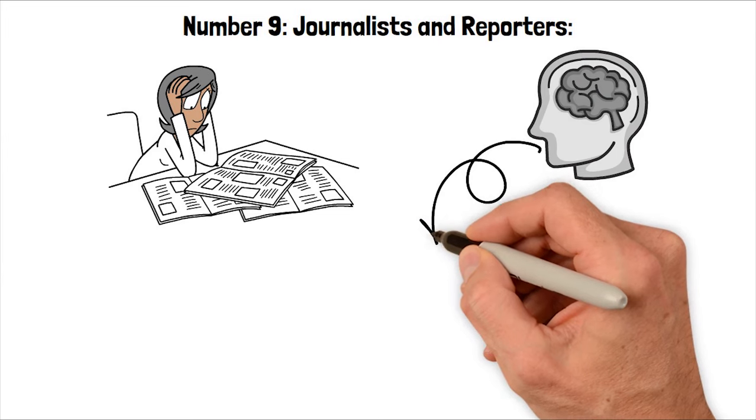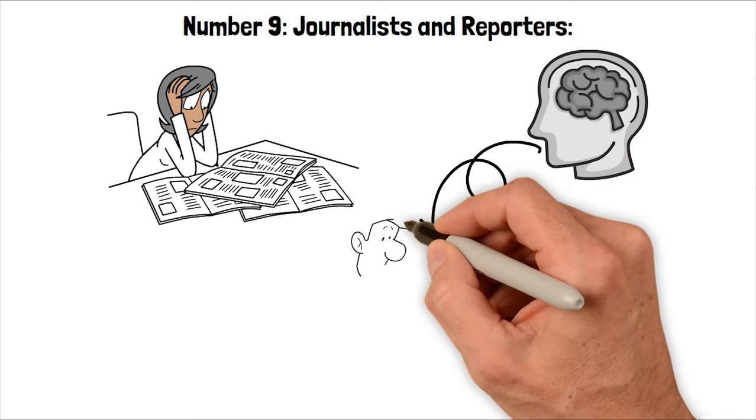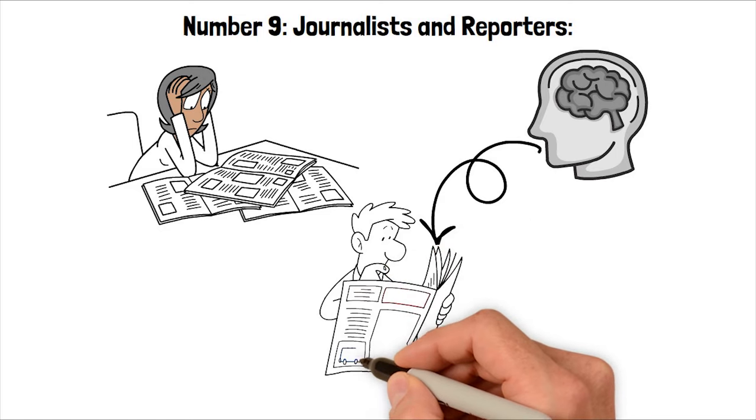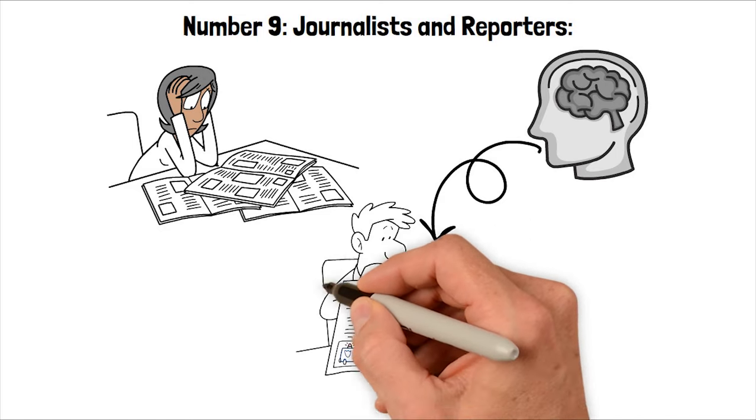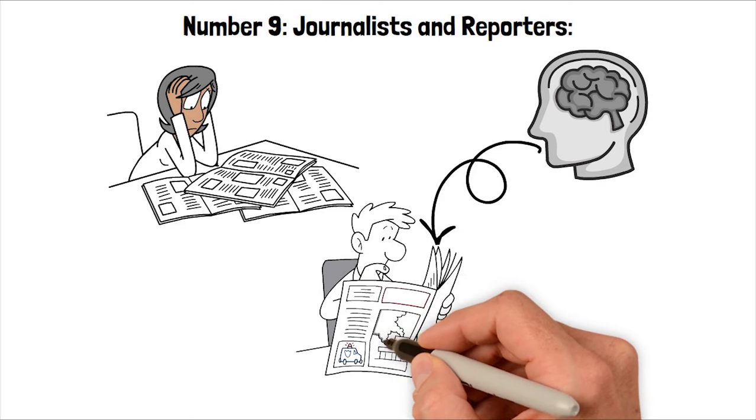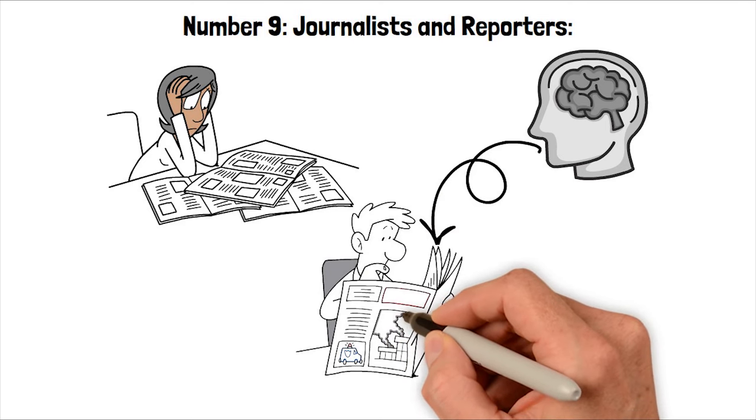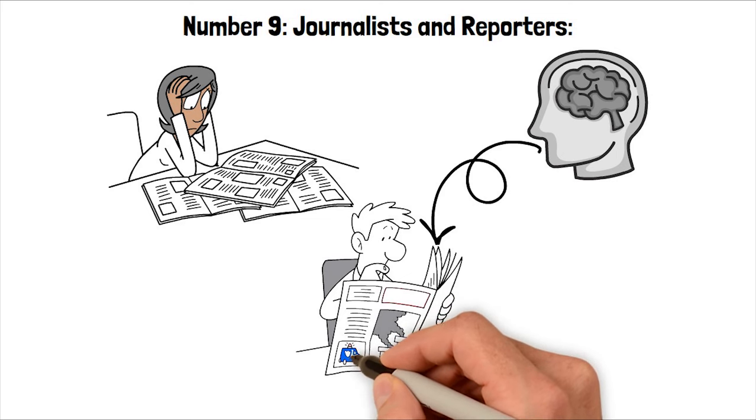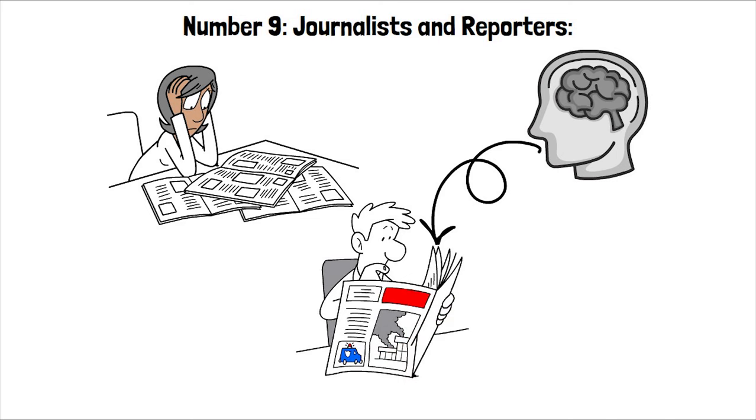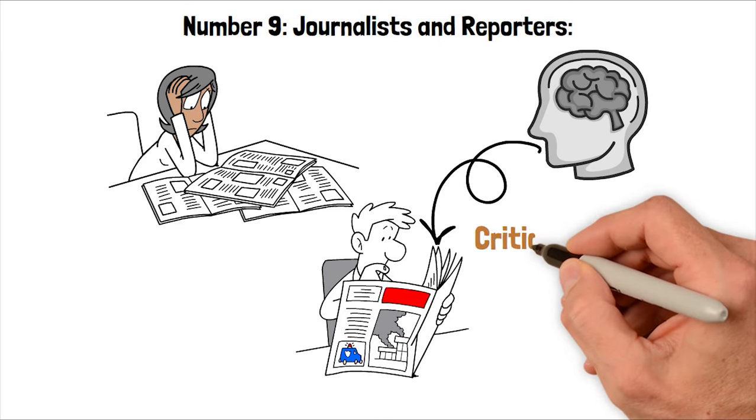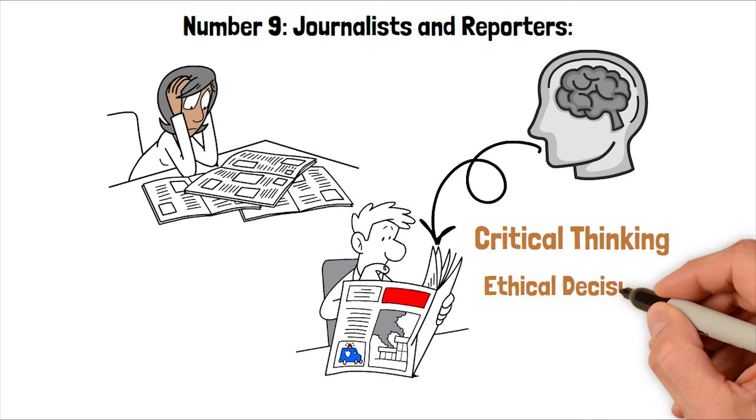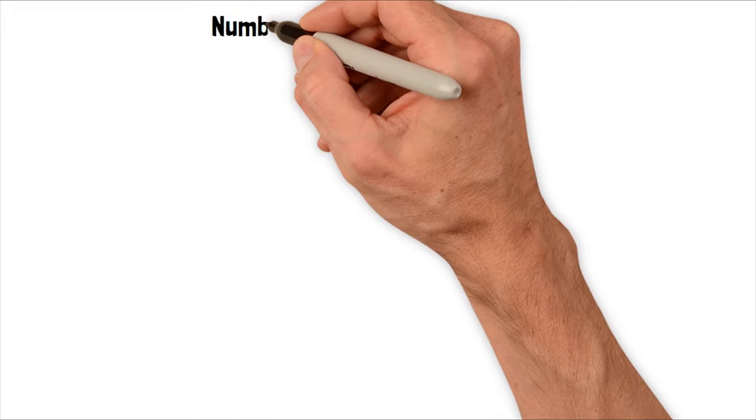As AI technology continues to evolve, journalists must adapt by focusing on in-depth analysis, investigative journalism, and providing context and perspective to stories. The integration of AI-driven content generation underscores the need for journalists to emphasize their unique strengths, such as critical thinking and ethical decision-making, to maintain the credibility and relevance of journalism in the digital age.